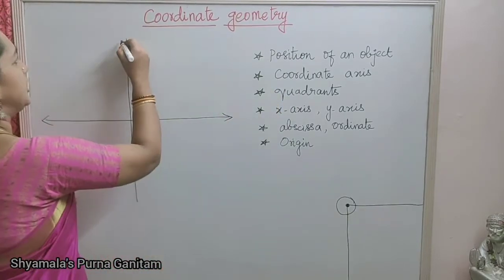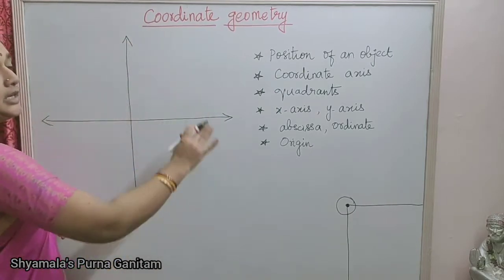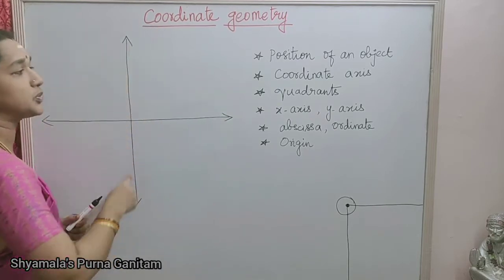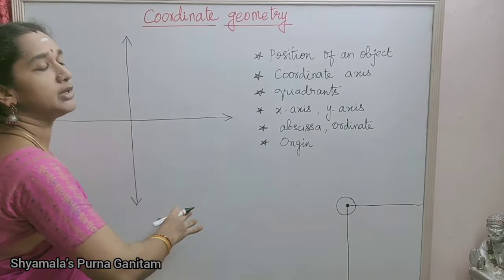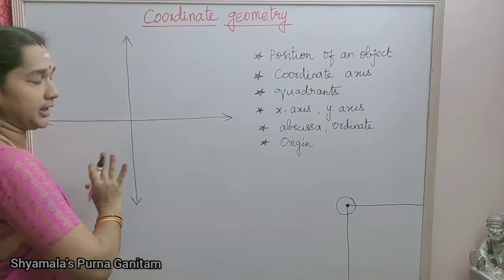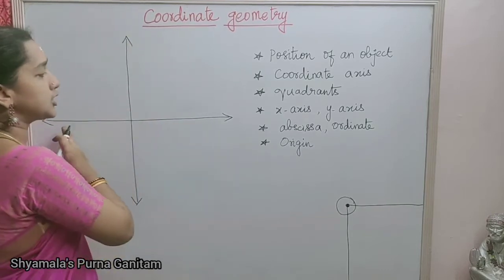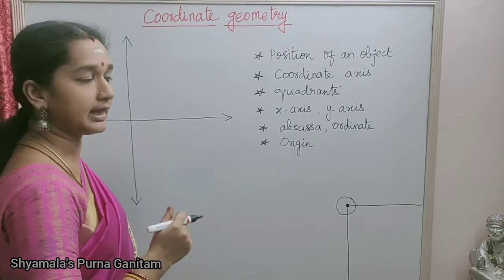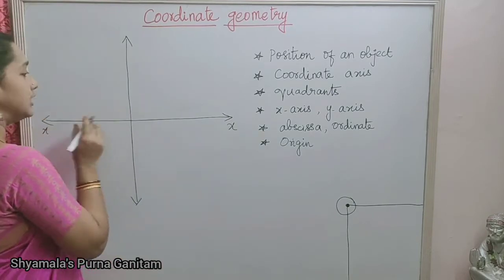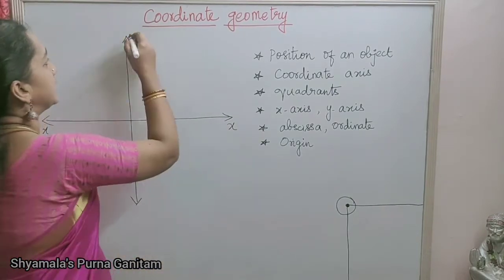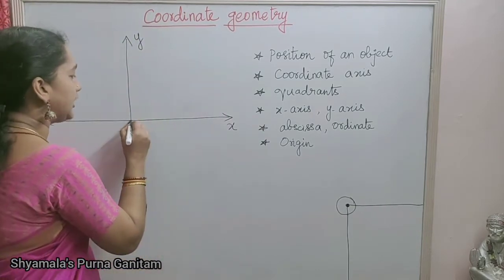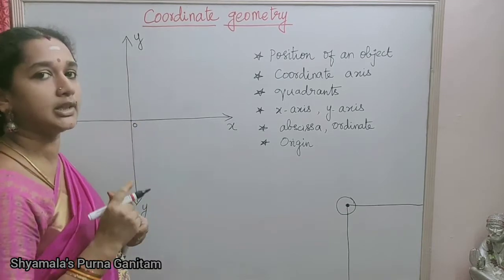If you take an axis — this is the horizontal axis and this one is the vertical axis — this will be placed in the Cartesian plane. We will be saying this as a Cartesian plane. In this plane, horizontal and vertical lines will be there. The horizontal axis is called the x-axis and the vertical axis is called the y-axis. The point where both intersect is called the origin.